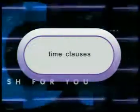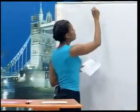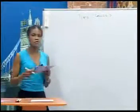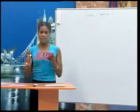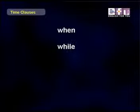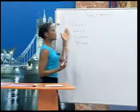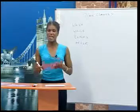Now let's finish our lesson with Time Clauses. A clause is a group of words that have a subject and a verb — it is usually only part of a sentence. A time clause begins with words such as when, while, before, and after. In a sentence with a time clause, there is usually a main clause too.